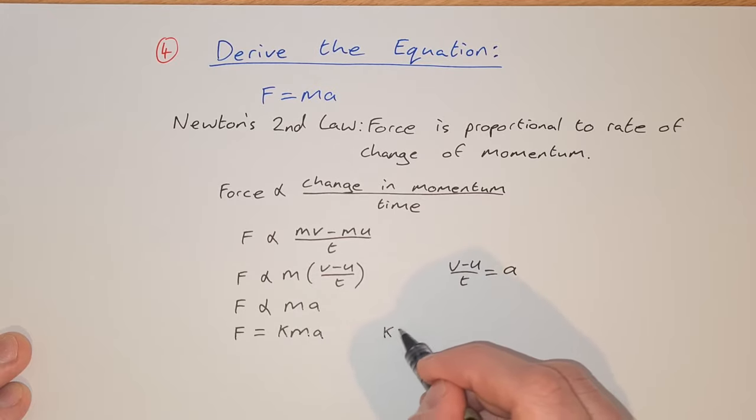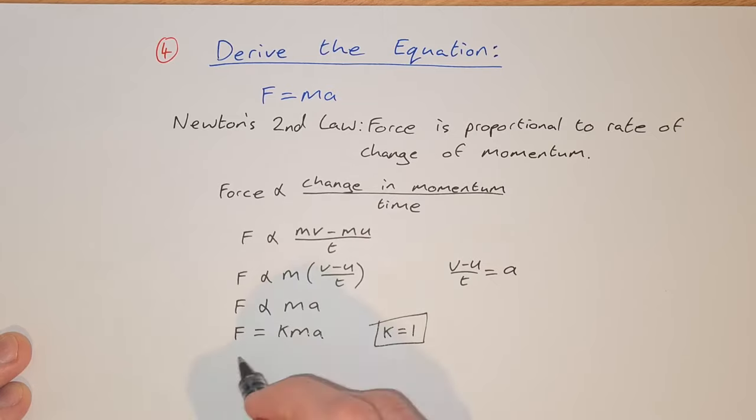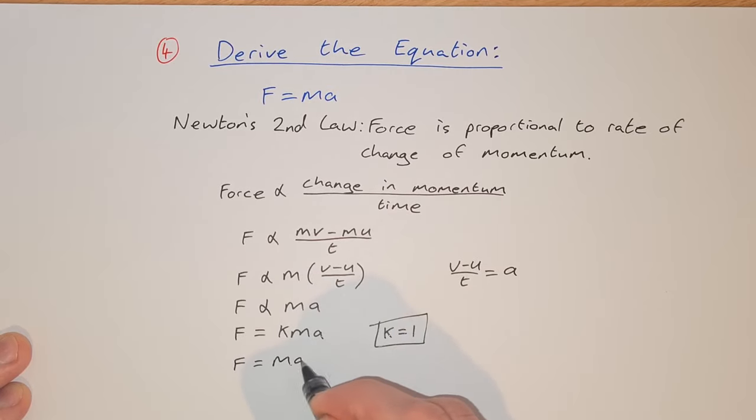And k equals 1. I'll explain why in a second. If k equals 1, that means f equals ma, which is what we were asked to show.